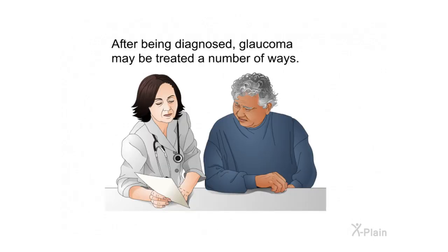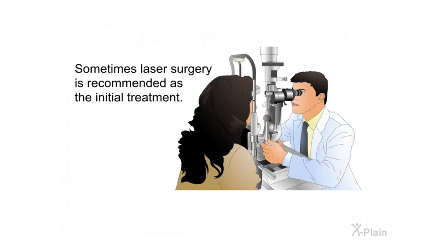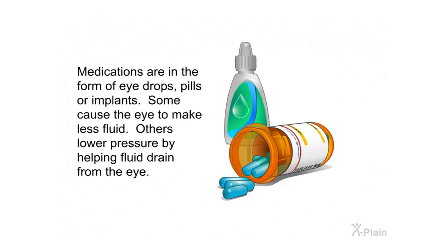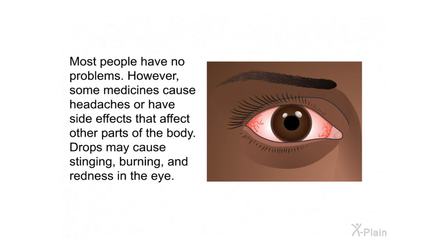After being diagnosed, glaucoma may be treated a number of ways. Medication is usually tried first; if medication cannot control eye pressure sufficiently, surgery may be needed. Sometimes laser surgery is recommended as the initial treatment. Medications come in the form of eye drops, pills, or implants — some cause the eye to make less fluid, others lower pressure by helping fluid drain. Glaucoma medications are usually taken several times a day. Some medicines cause headaches or side effects affecting other parts of the body; drops may cause stinging, burning, and redness in the eye.